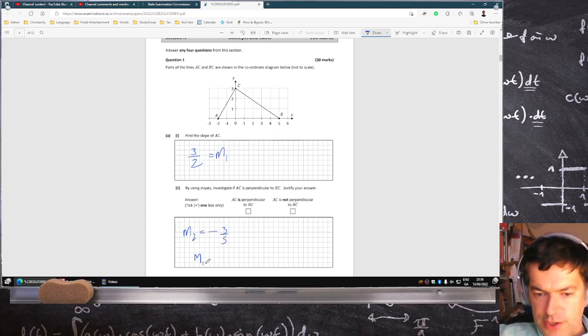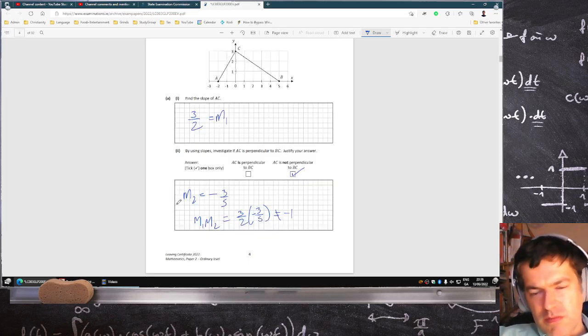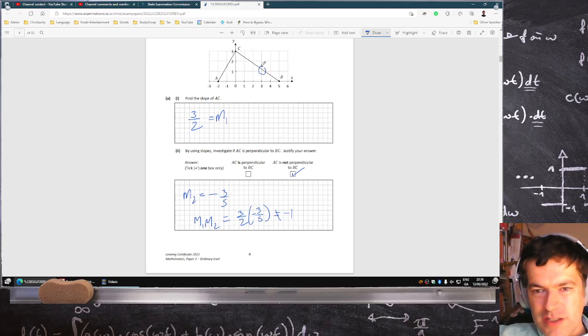To check if they're perpendicular, you have to check what happens when you multiply them, if you get minus 1 or not. And that does not equal minus 1, so they're not perpendicular. If it was perpendicular, it should be go out 2 and go up 3, and then go out 3 and down 2. And it's not quite 2, so you can kind of tell it's not perpendicular.